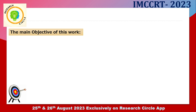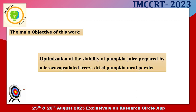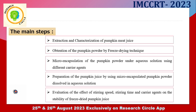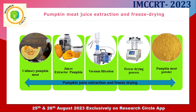The main objective of this work is the optimization of the stability of pumpkin juice prepared by micro-encapsulated freeze-dried pumpkin meat powder. The main steps were: extraction and characterization of pumpkin meat, obtention of the pumpkin powder by freeze-drying technique, micro-encapsulation of pumpkin powder using different carrier agents, and preparation of the pumpkin juice using micro-encapsulated pumpkin powder dissolved in a cool solvent solution.